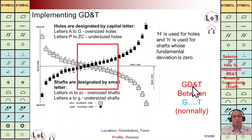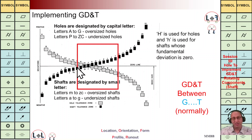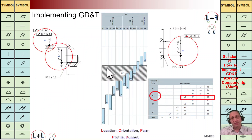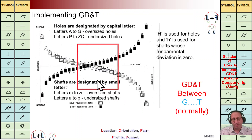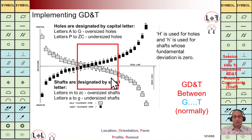Let me highlight this topic in GD&T: normally 90% of tolerances for rotating components are between G and T — 90% fall in this interval. From G we have clearance, in H we also have clearance fit, and then we go through JS, J, K, and then into interference and transition fits. Keep in mind that tolerances for rotating components are normally between G and T.